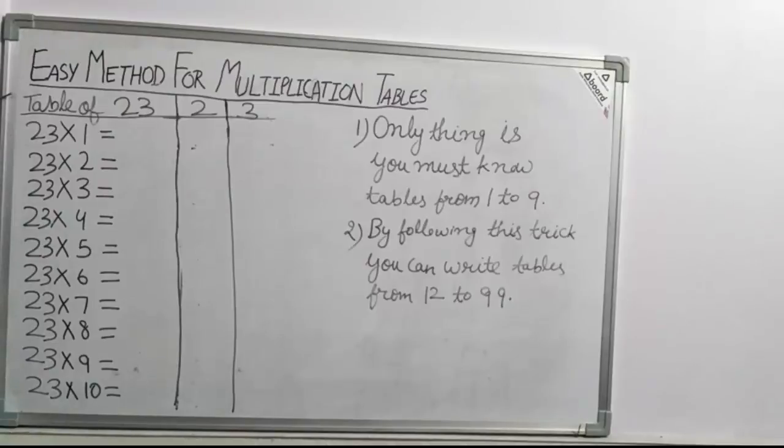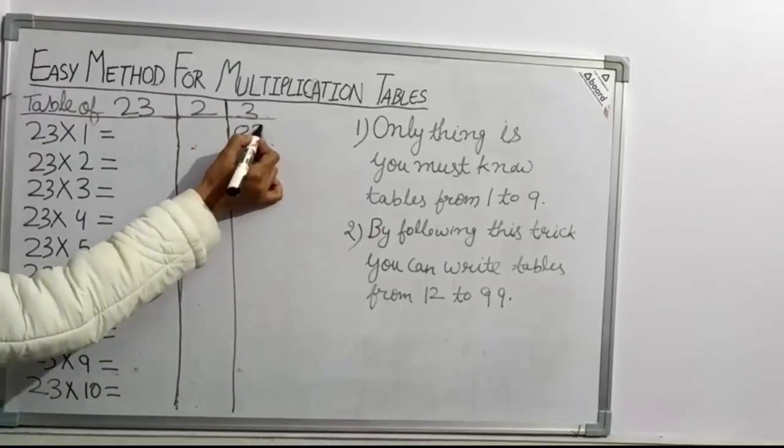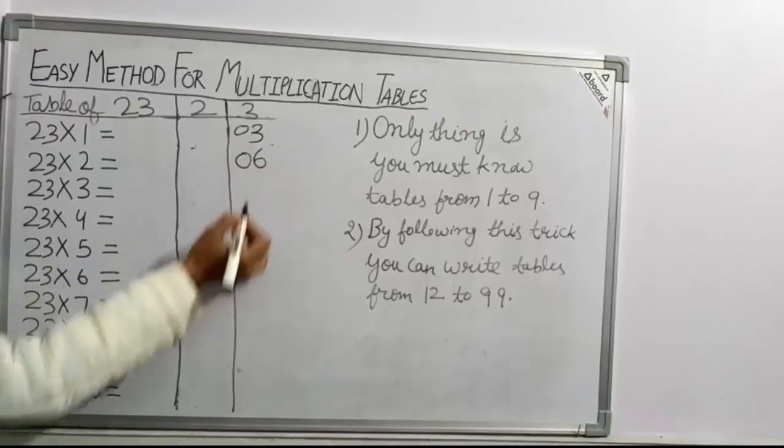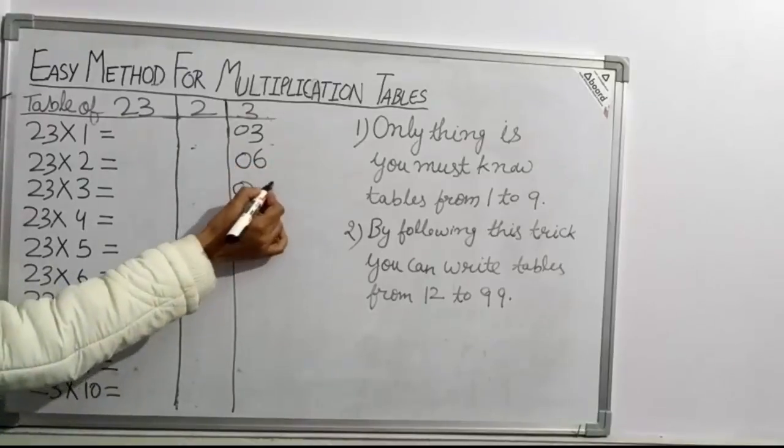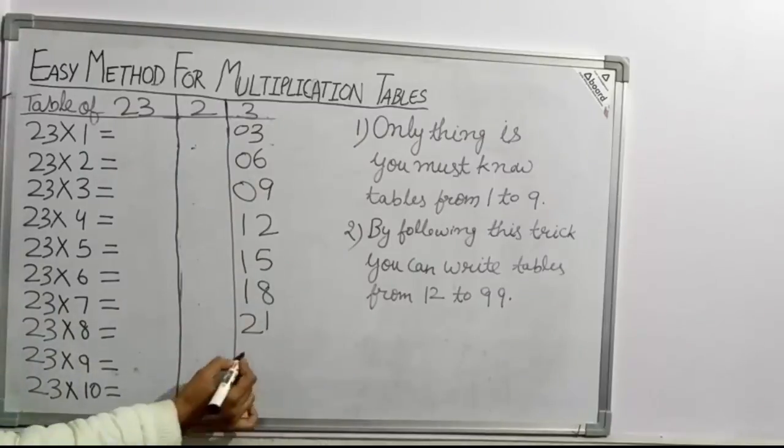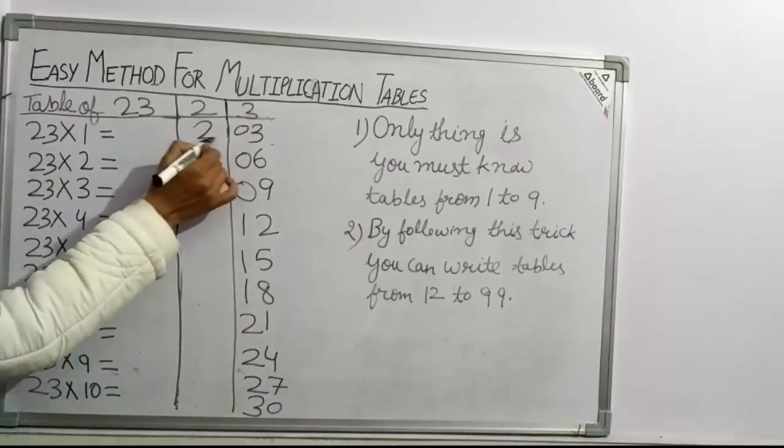Now let's take another example. Let's take the table of 23. For this we have to do, first take table of 3, and then write table of 2. Table of 3 is: 3×1 = 0 3, 3×2 = 0 6, 3×3 = 0 9. Now table of 2. 2×1 = 2.